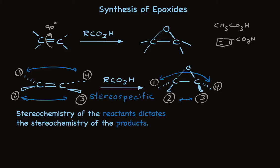So, for example, if substituents 1 and 2 started squished together, 1 and 2 would be squished in the products. This is a very important aspect of epoxide chemistry and one of the reasons it's so widely used. Peracid synthesis of epoxides from alkenes is a one-step reaction that's stereospecific.